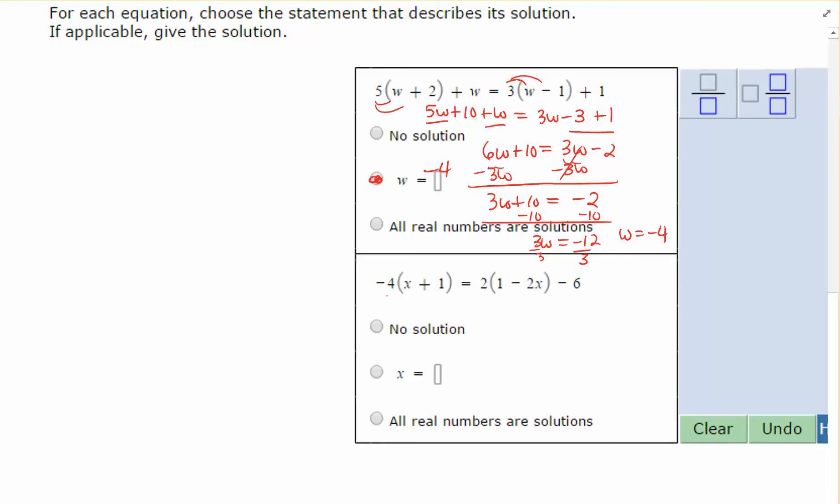Now in the next example, when we distribute, we have negative 4X minus 4 equals 2 minus 4X minus 6. So negative 4X minus 4 equals negative 4X—I'm going to write the X first—and 2 minus 6 is negative 4.